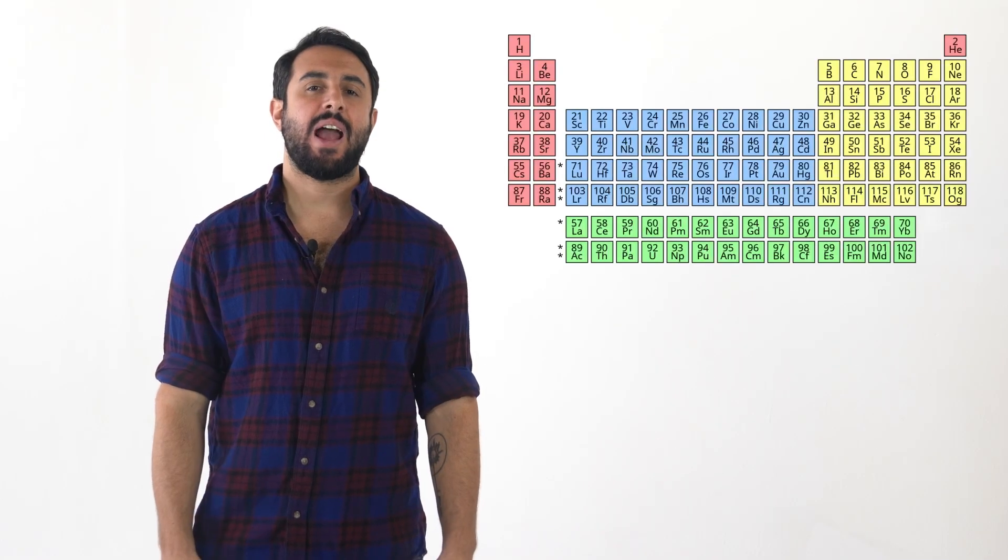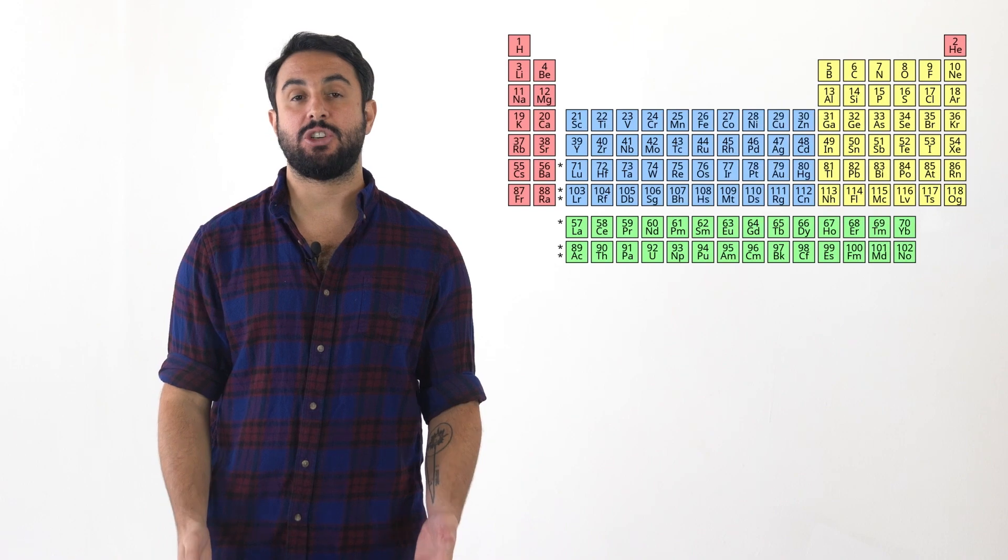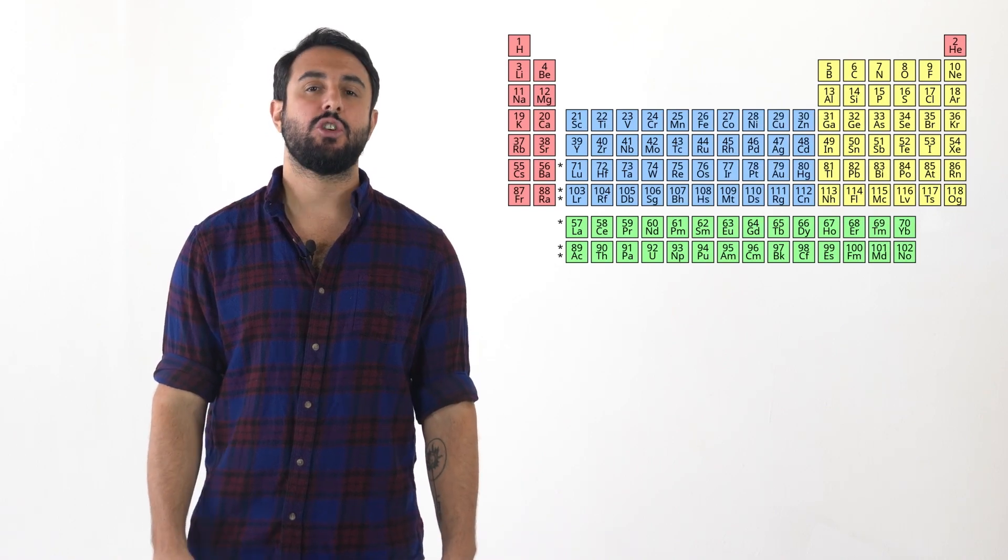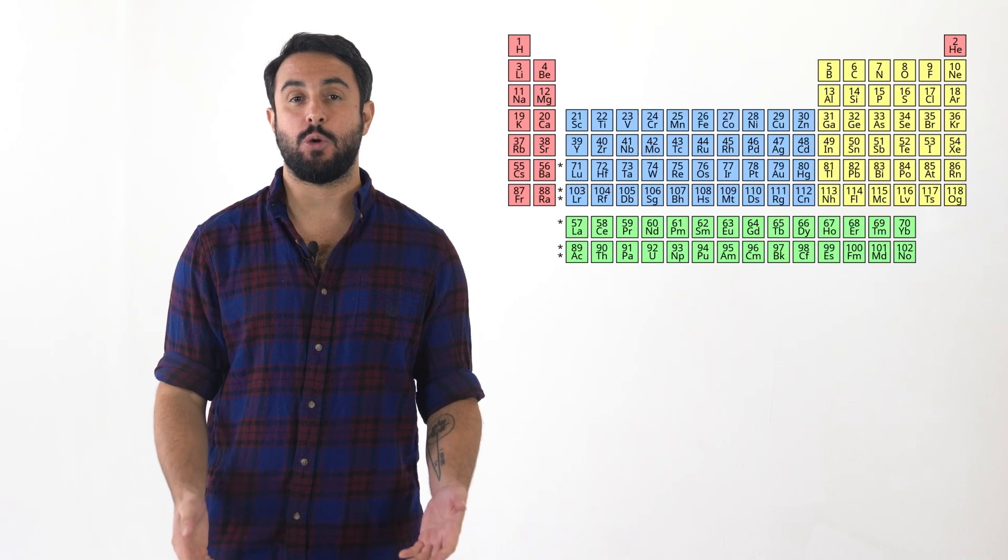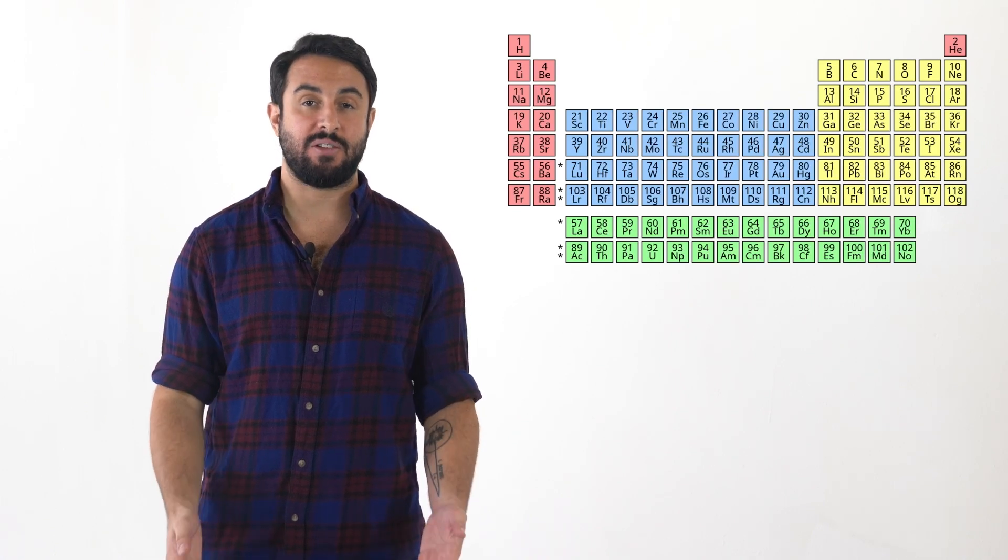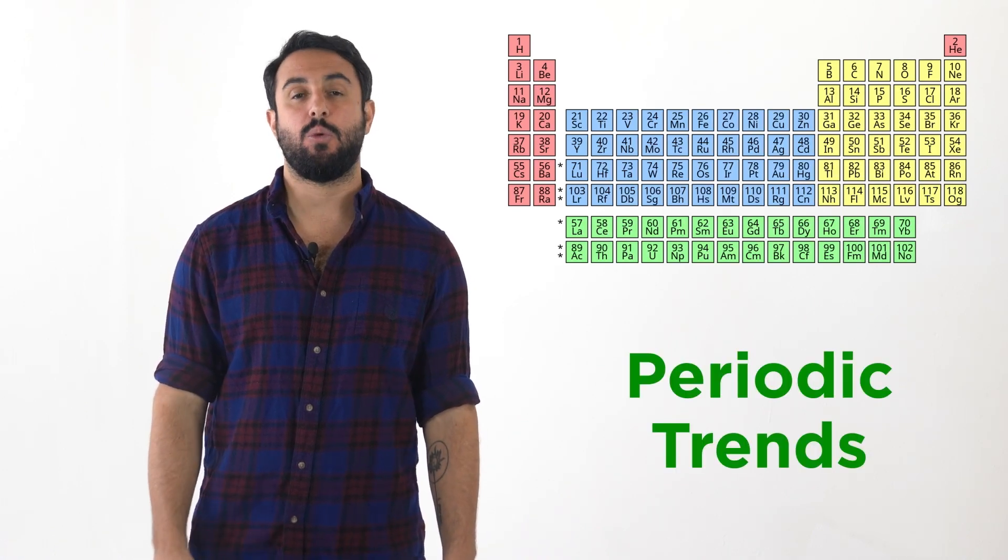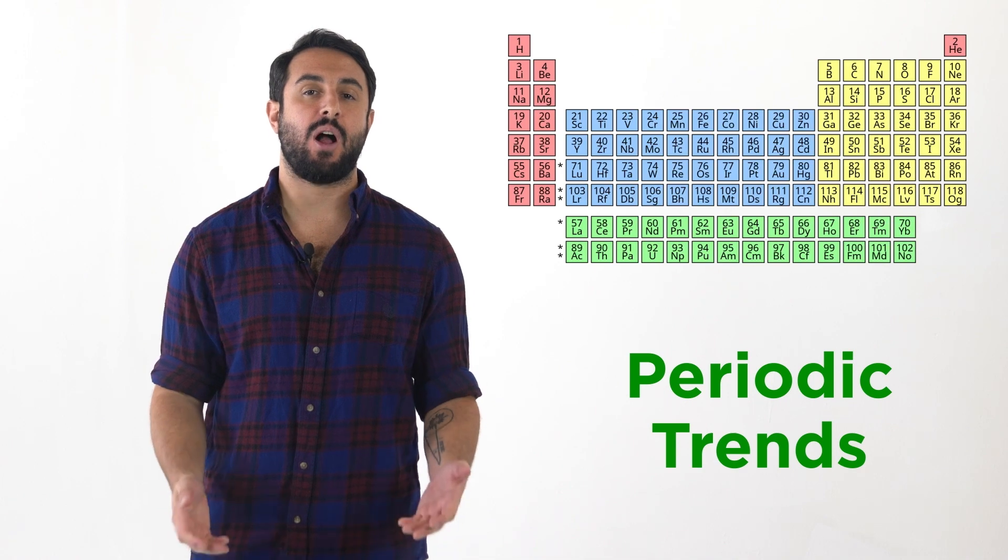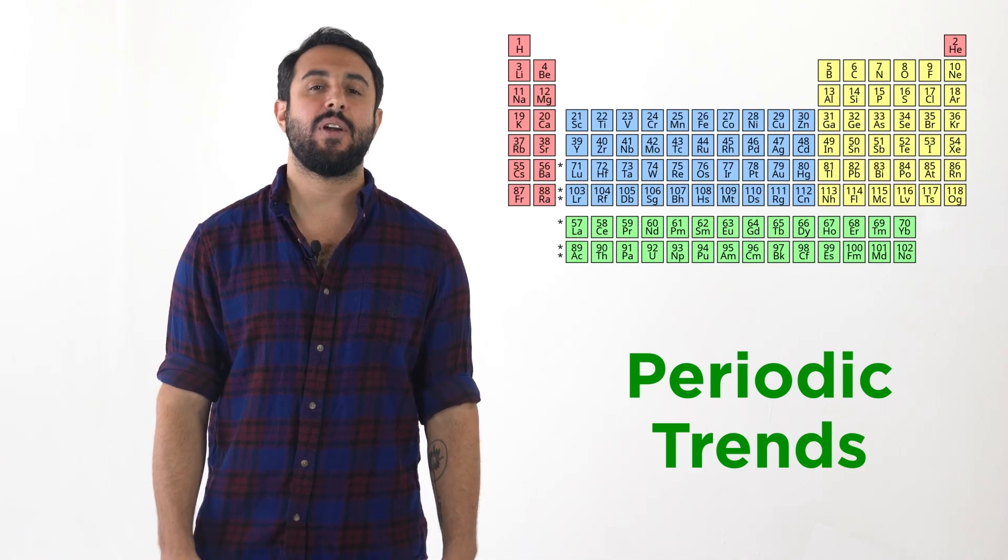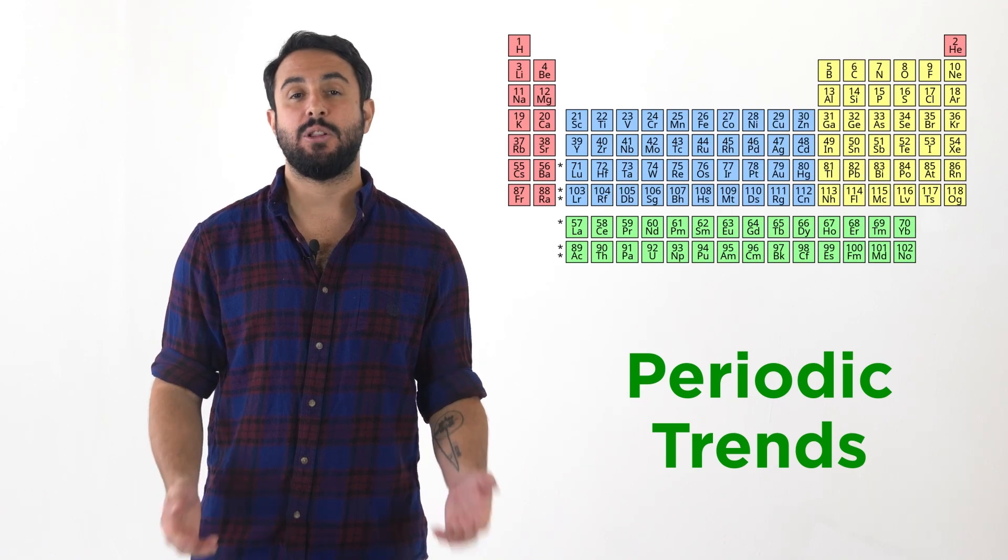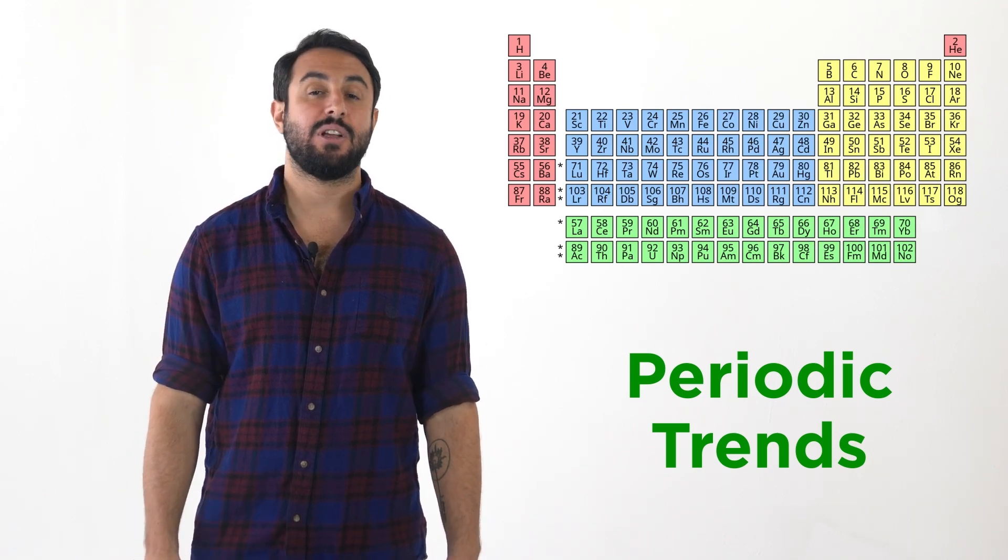Professor Dave and Chegg here. We now have an understanding of the manner in which electron configurations determine the structure of the periodic table, with elements in a particular group sharing the same number of valence electrons. From the table we can also learn about a number of other trends that dictate the properties and reactivities of the elements. These will be very important to understand as we learn more chemistry, so let's get a look at these now.